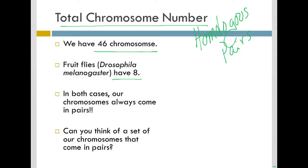If anything is in common there, in both cases, our chromosomes always come in pairs, so you will have an even number of total chromosomes. And so you might be able to think of a set of our chromosomes that you hear about coming in pairs. When I think of chromosomes as a set that I might have heard of or that people talk about, you think about the sex chromosomes.